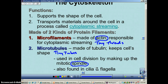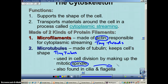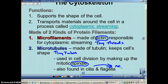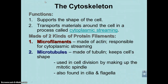Microtubules are also used to make cilia and flagella, and we're going to learn about those in just a little bit. Both of these structures are mainly used for movement. The most familiar one you'll be with is the flagella, which you would find on a sperm cell.